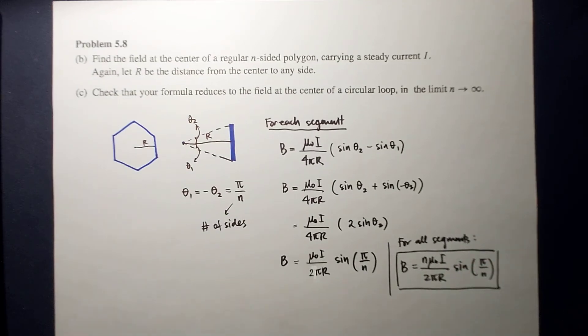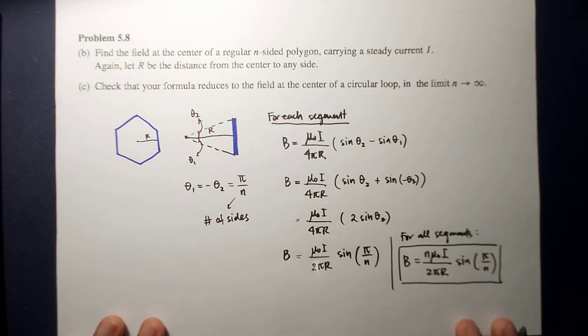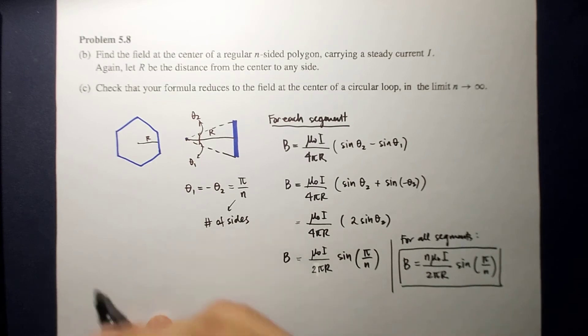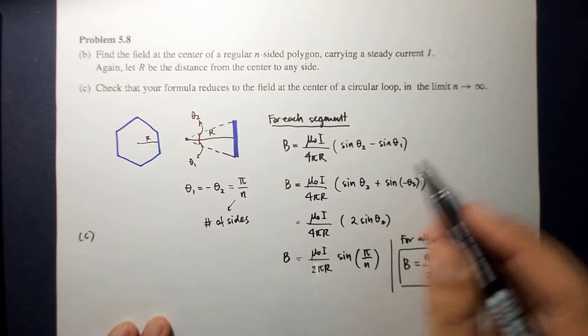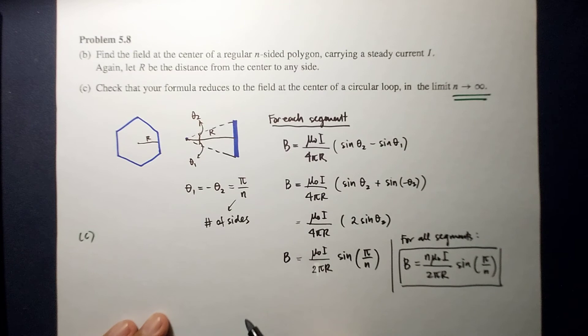Now for letter C, let's check the formula or the equation and let's see if it reduces to the field at the center for a circular loop wherein we set that the limit is n approaches to infinity.